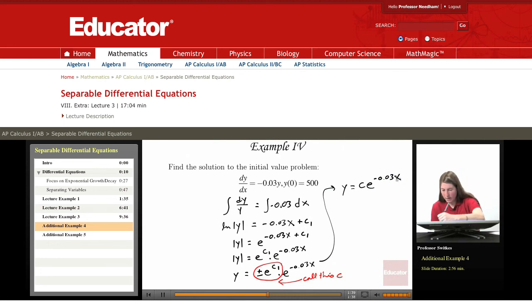Now we have an initial condition to apply y of 0 equals 500. So y of 0 equals 500 which equals c e to the negative 0.03 times 0. So we get that 500 equals c because e to the 0 is 1.